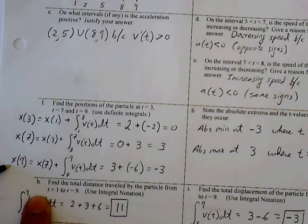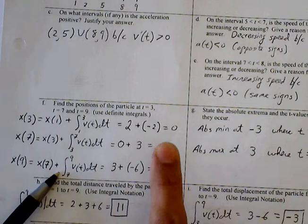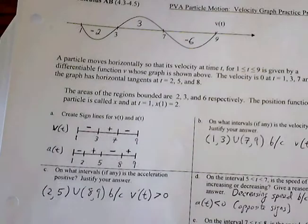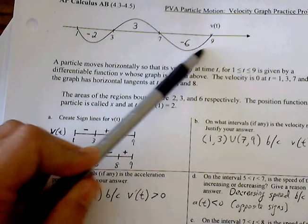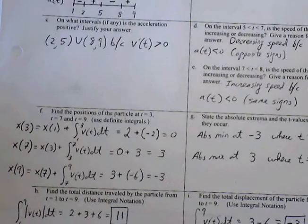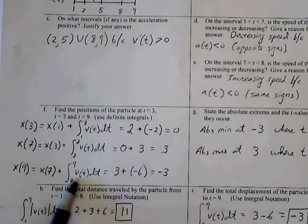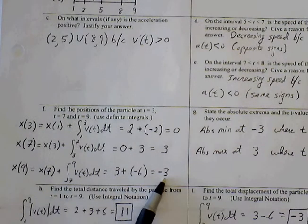x of 9, to find my position at 9, I left off at x of 7, and then I just need to add the area underneath the curve, the integral between 7 and 9. Between 7 and 9, the definite integral is negative 6, so I simply add that to my previous x of 7. x of 7 plus the definite integral from 7 to 9 would be 3 plus negative 6, which is negative 3.